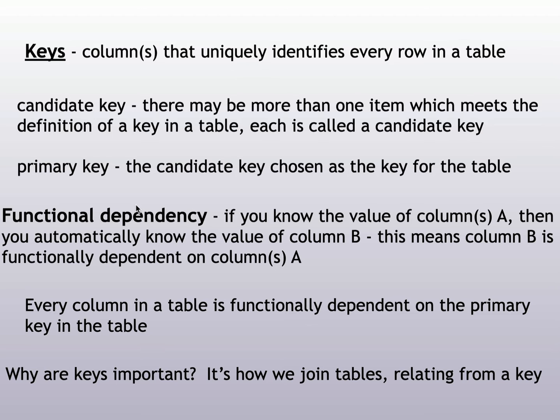In order to understand normal forms, you need to understand keys. A key is an item that uniquely identifies every row in a table — if I know the value of a key, I know the value of every other item in that table. We have candidate keys: individual or multiple columns taken together that may uniquely identify the rows. We have to identify a primary key — the candidate key we're going to use — and then we stick with that primary key.